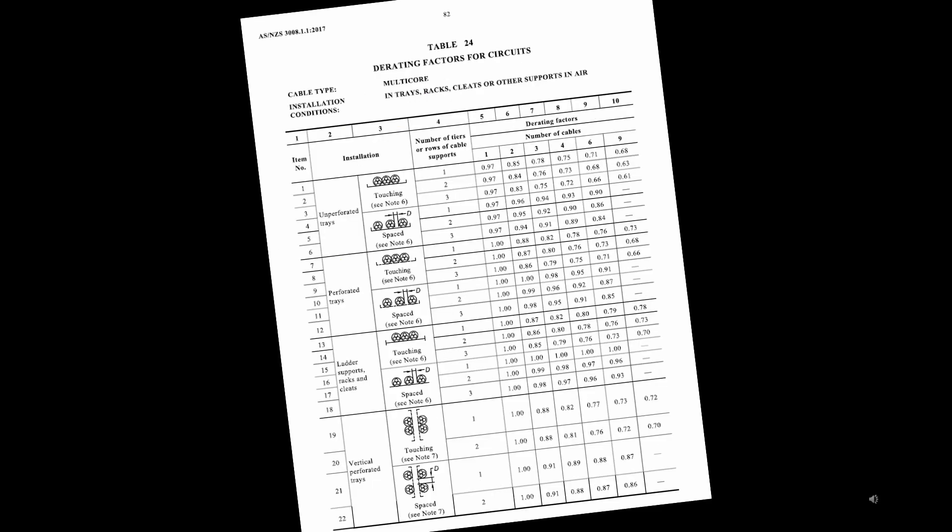Table 24 is for derating multicore cables that are sitting on a cable ladder. So, if we're using a cable ladder and there are two cables touching each other, we will have to multiply the current carrying capacity of that cable by the derating factor. And in this case, for two cables next to each other on a cable ladder, that will be a derating factor of 0.87.